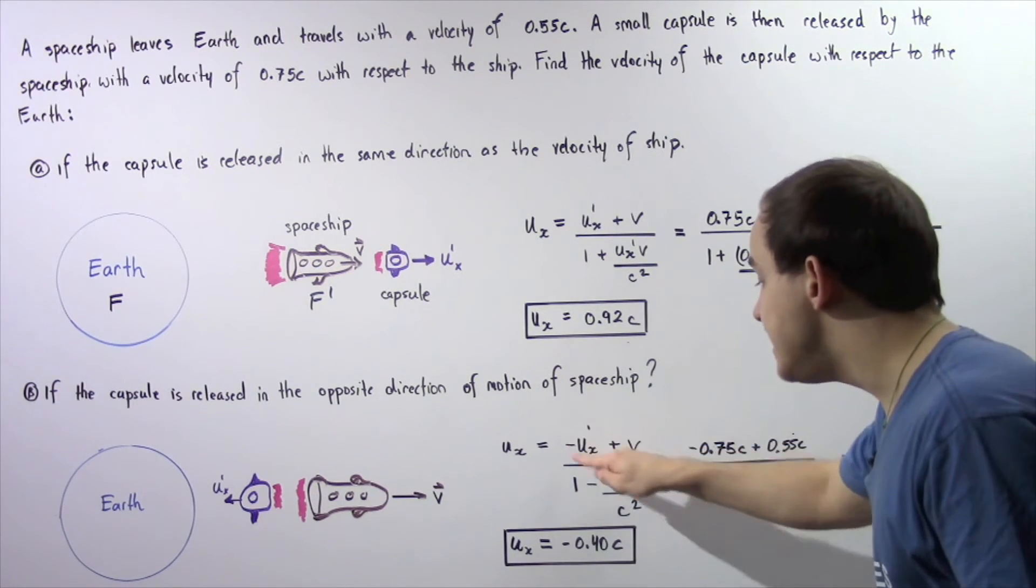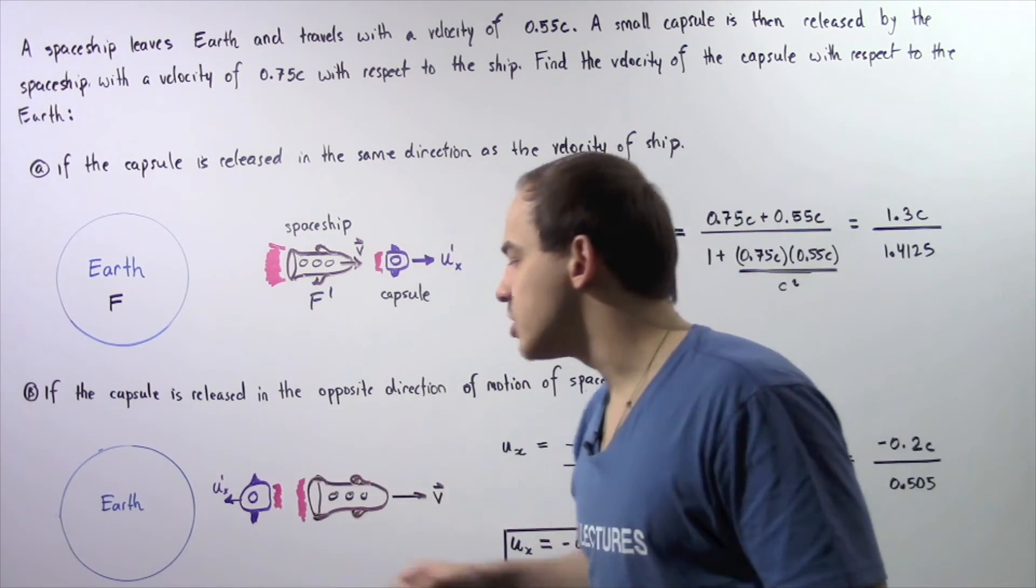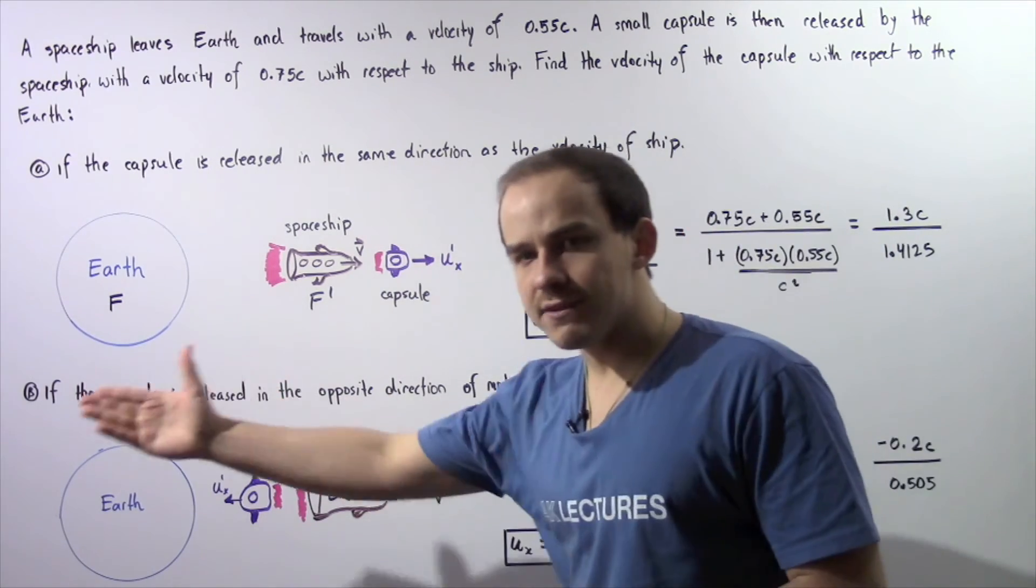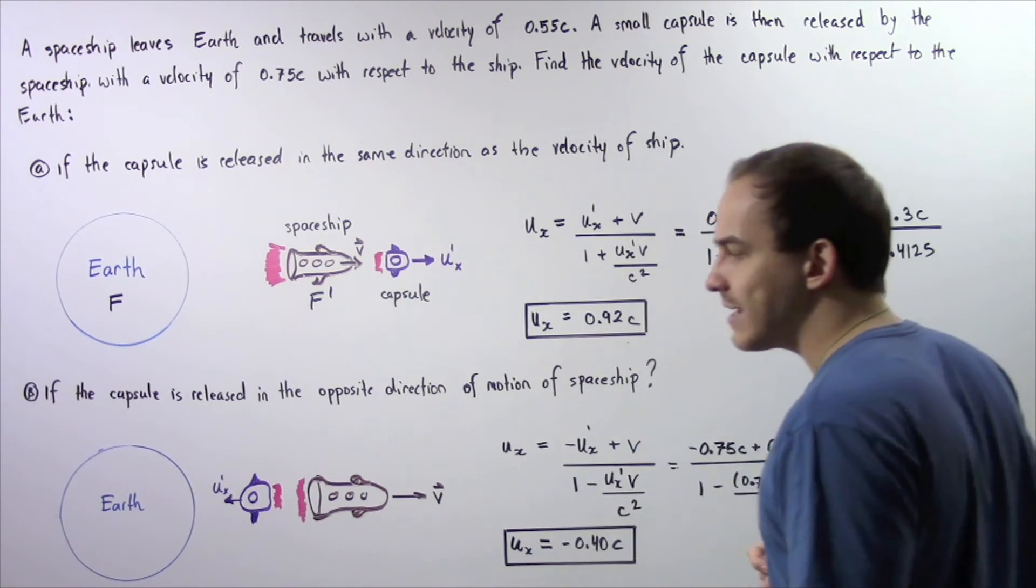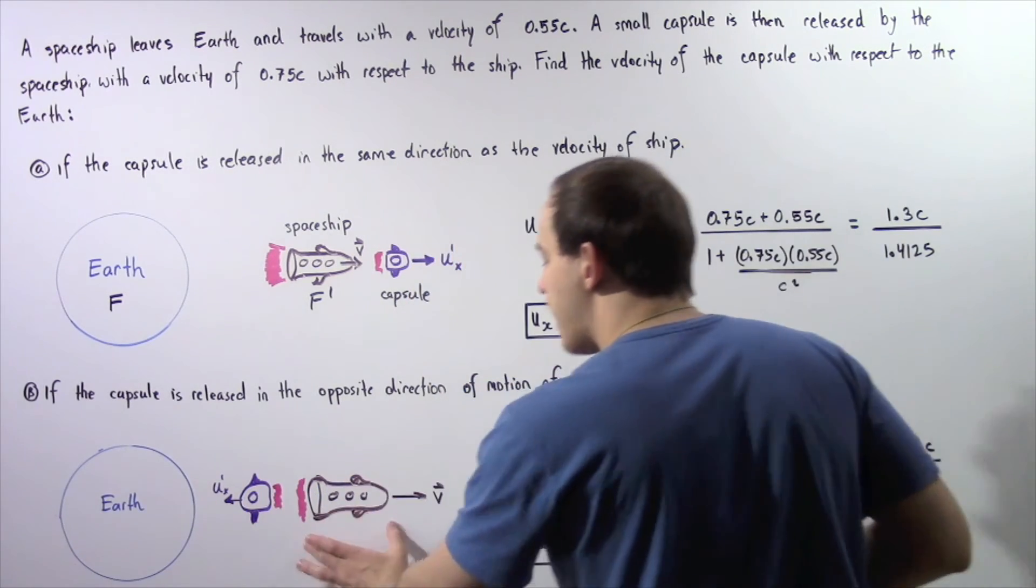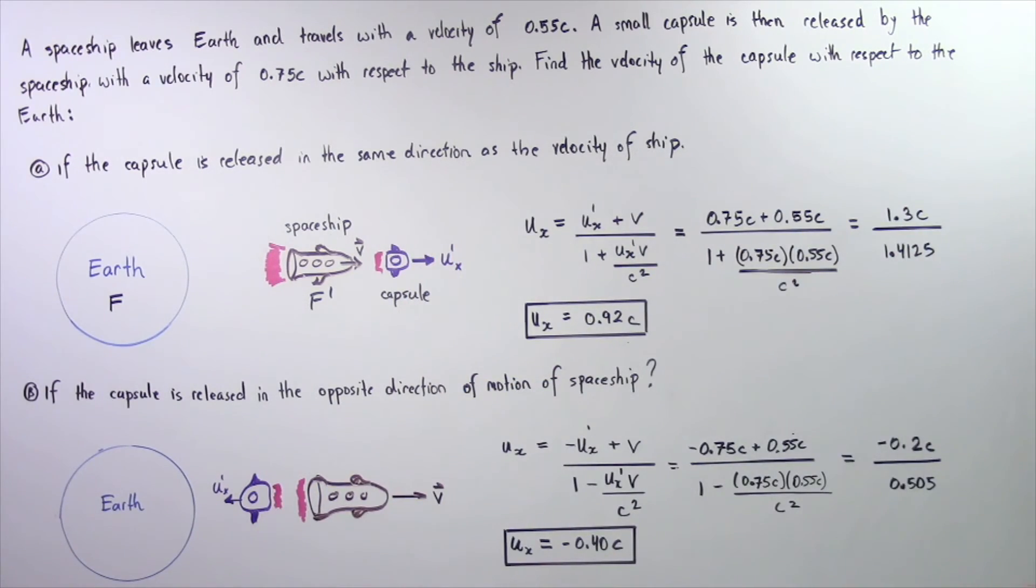Once again, the negative comes from the fact that the capsule is moving in the negative direction along the x-axis toward the Earth and away from the spaceship. Negative 0.75C plus 0.55C gives us negative 0.2C.